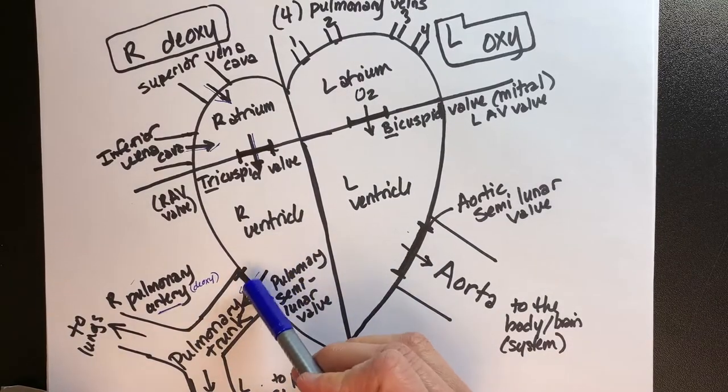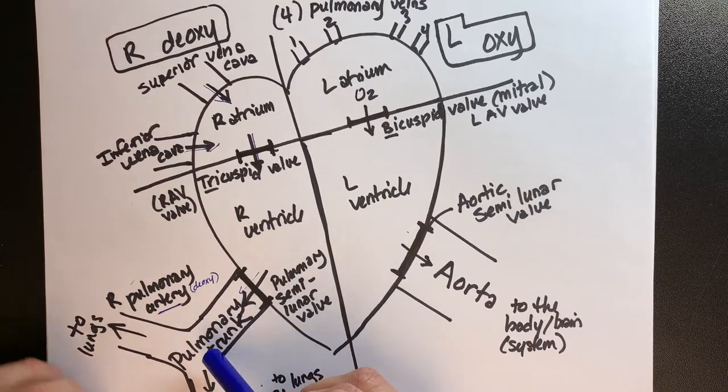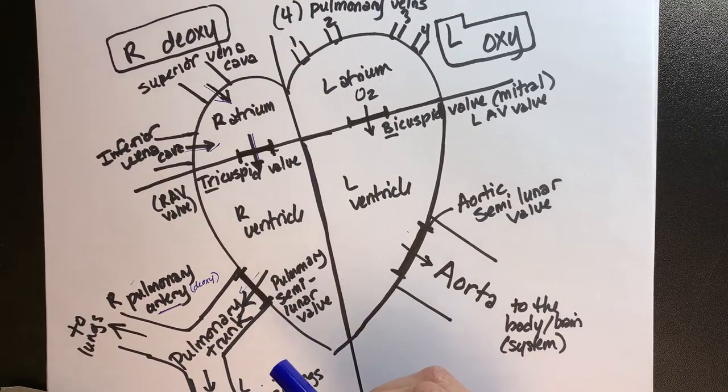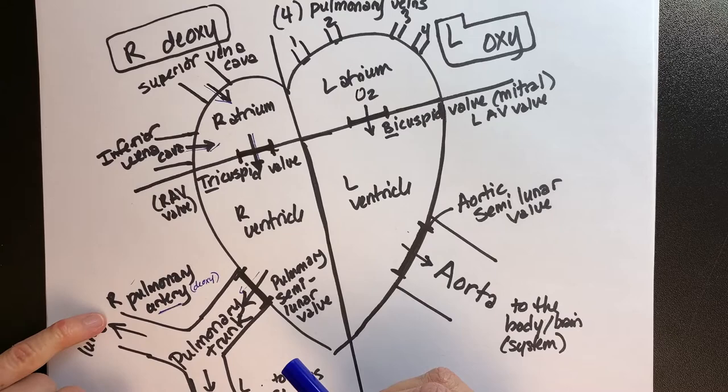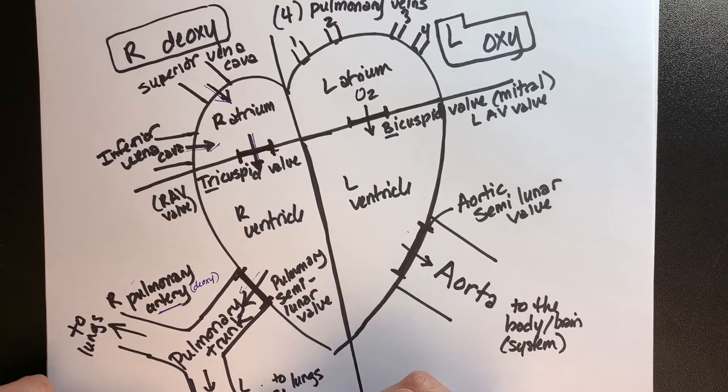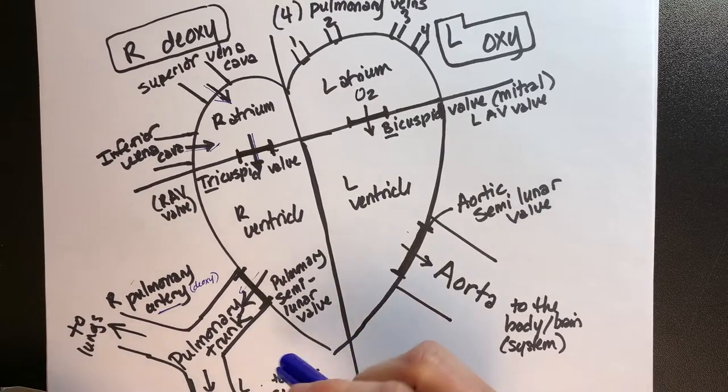So we've left the right ventricle and we've gone into the pulmonary trunk, which is just a bridge. Now we're going to split and go to the right pulmonary artery and the left pulmonary artery, and then those are going to split and go to the lungs.